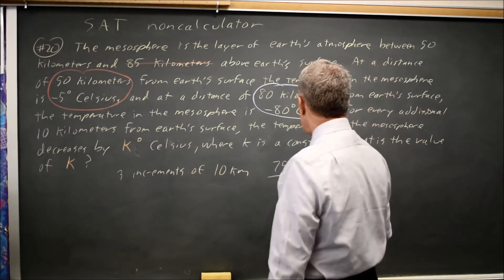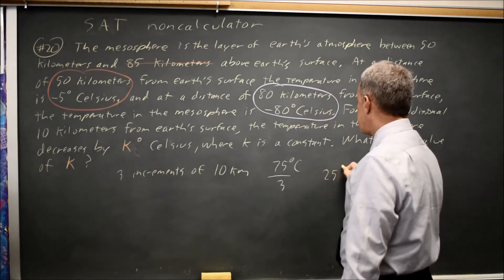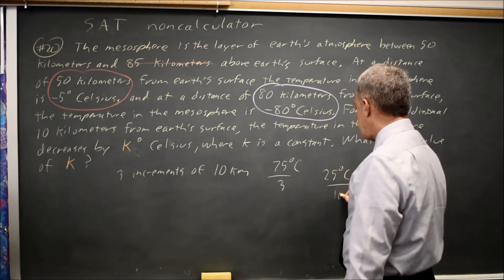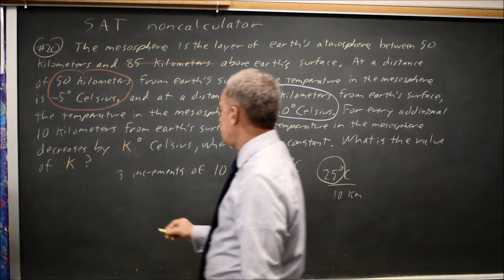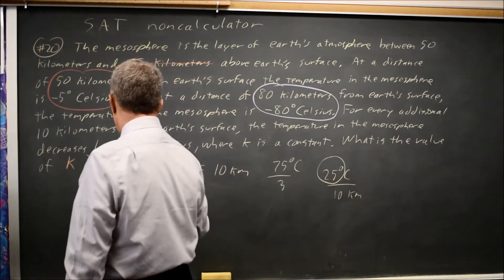each is 25 degrees C per 10 kilometers, so K equals 25.